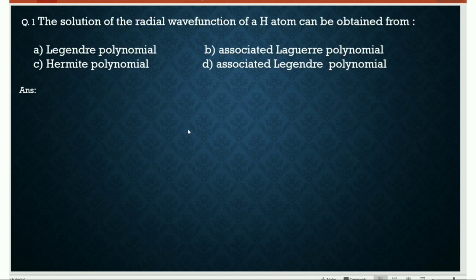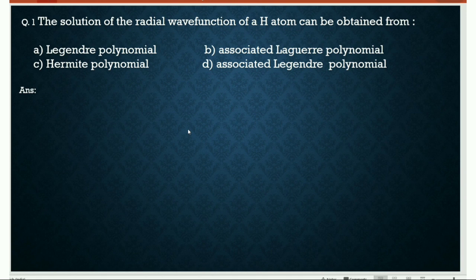First question: the solution of the radial wave function of a hydrogen atom can be obtained from Legendre polynomial, associated Legendre polynomial, Hermite polynomial, or associated Laguerre polynomial. The question is, we have to find the radial wave function of a hydrogen atom.